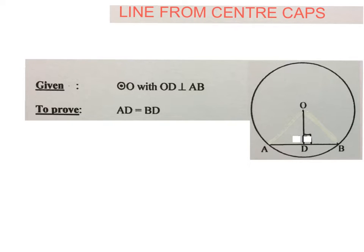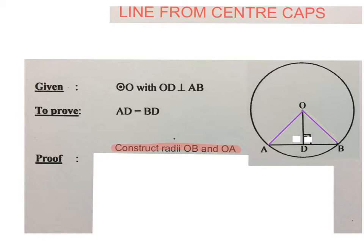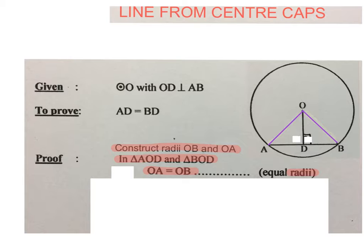Then everything from here on is what you have to do. You'll then write, I construct radii OB and OA, which I drew in here. Then I write, in triangle AOD, AOD and BOD, this triangle. In the two triangles, OA is equal to OB, because they are radii. You can see that there's OA is a radius and OB is a radius. OD is equal to OD, common. Both the triangles are using OD, the one triangle and the other triangle. OD is common to them.